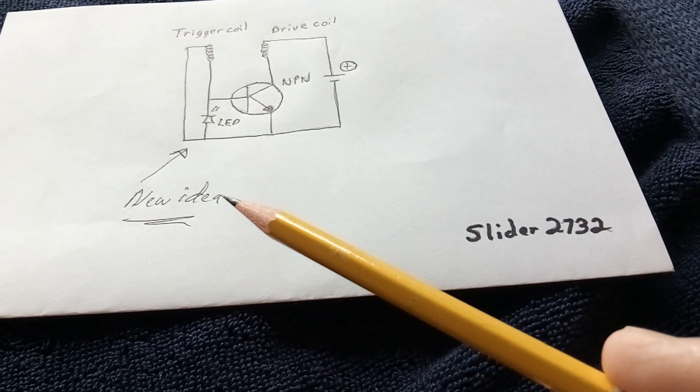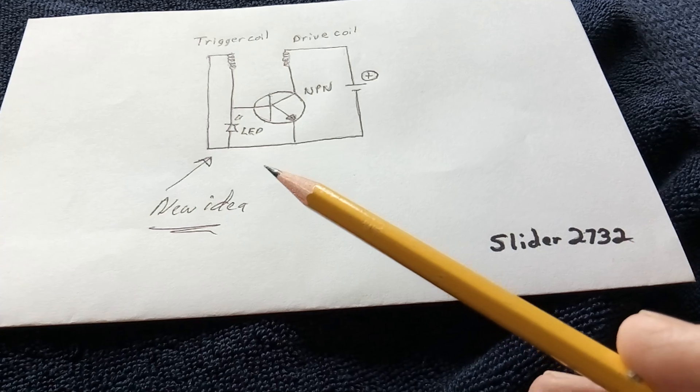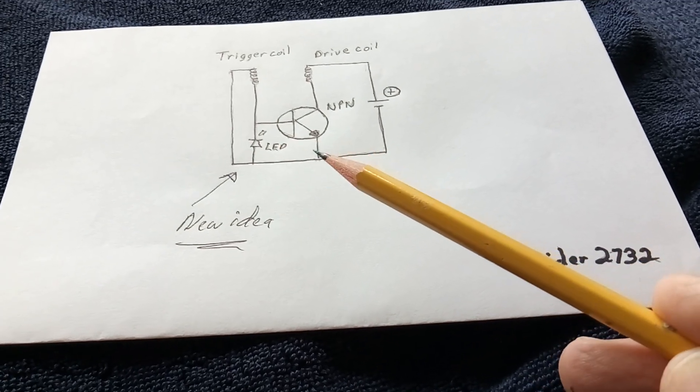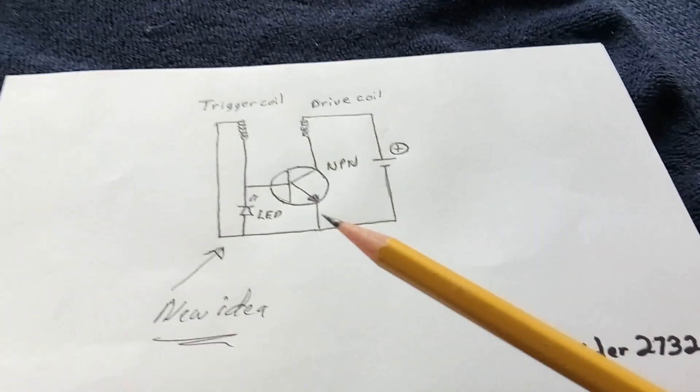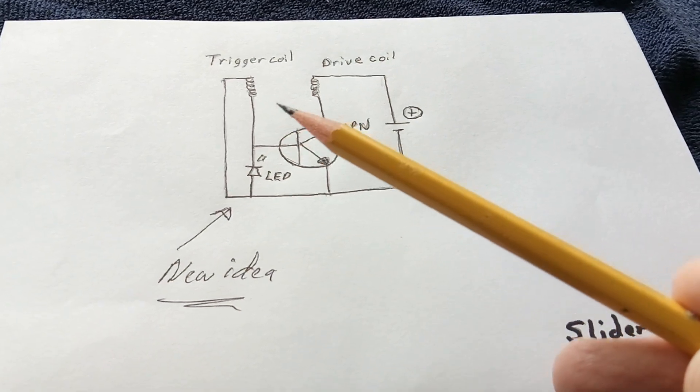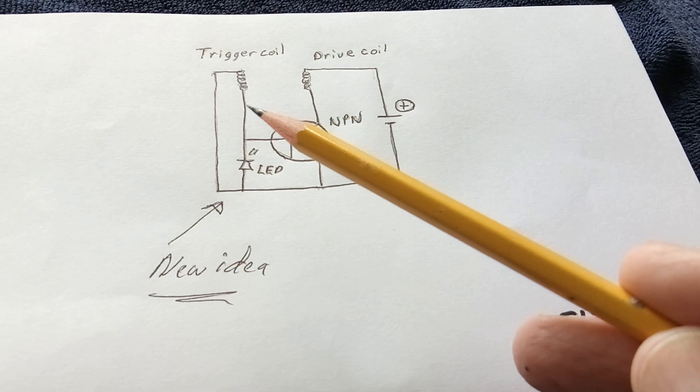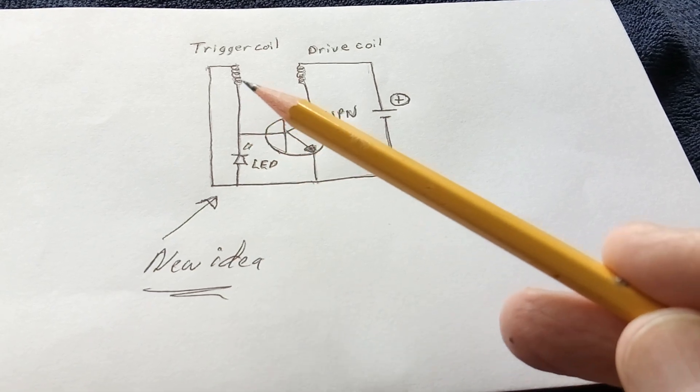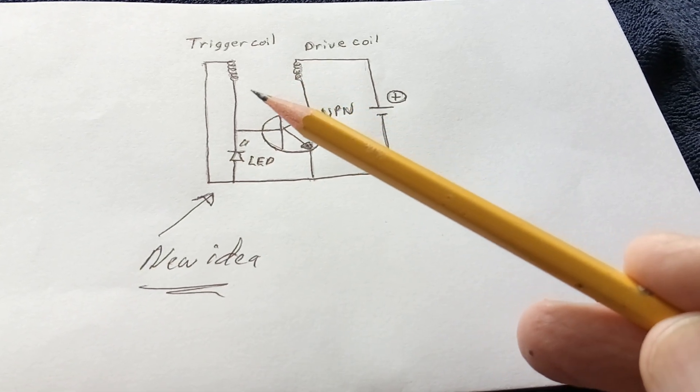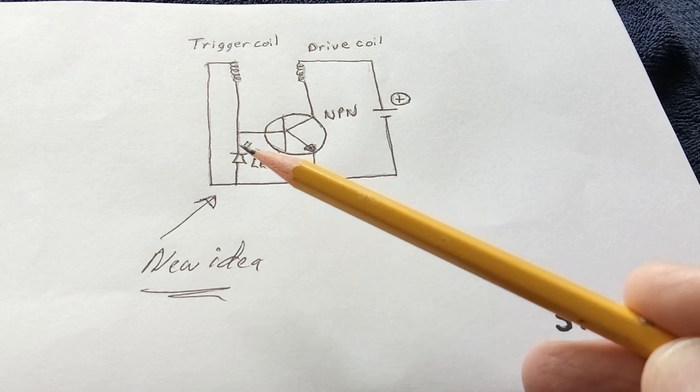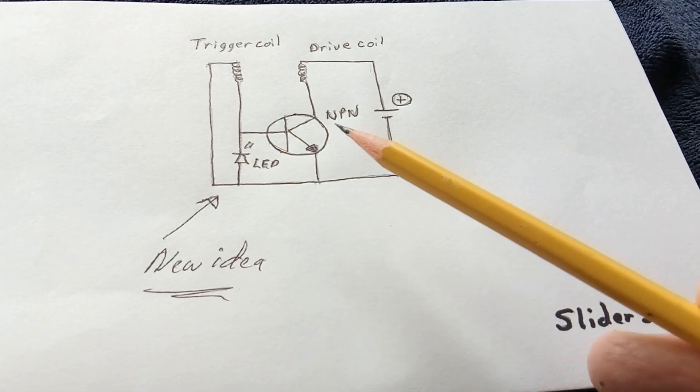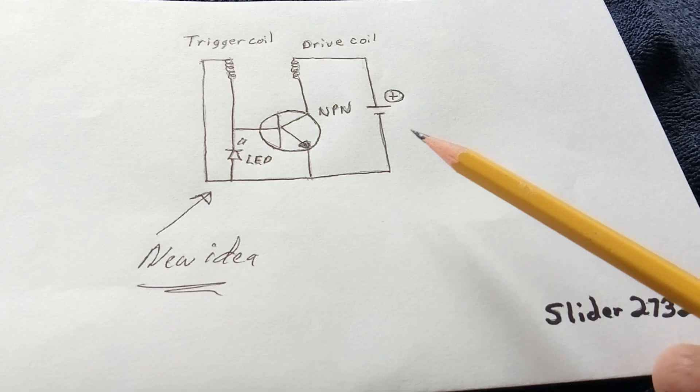And so anyway, this is Slider 2732. I believe this is a new idea. I haven't seen that done before. I've done it many times with just a diode, but on a standard Bedini circuit, there's usually a resistor of some sort in this part of it here.